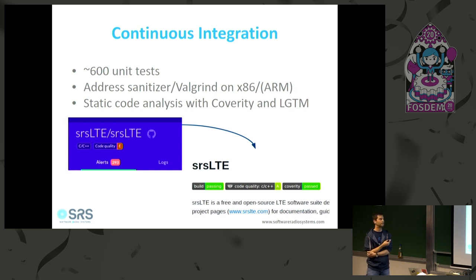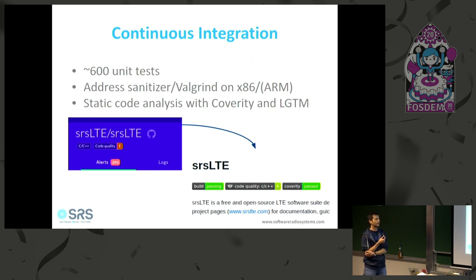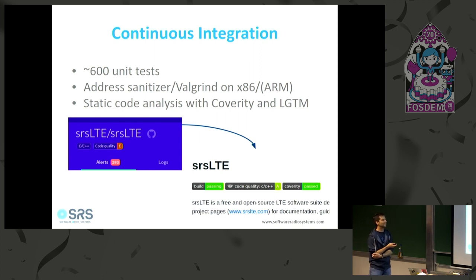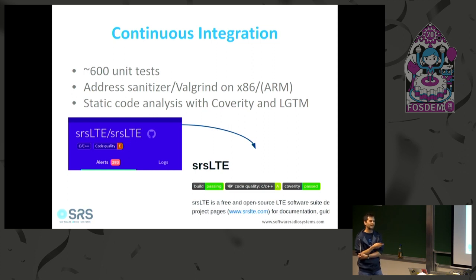We also leverage static code analysis tools available for open source projects like Coverity from Synopsys and LGTM. Looking at the initial analysis our code quality badge was an E — the worst — though it wasn't actually that bad. After addressing the issues we now get an A, and we hope to reach A+, which is the best possible rating.